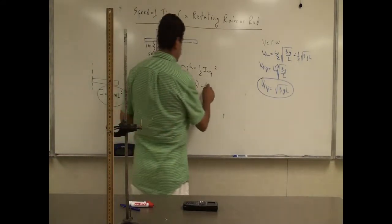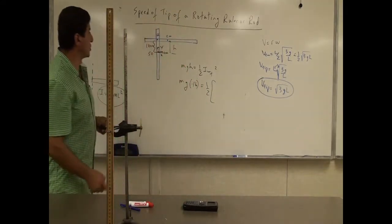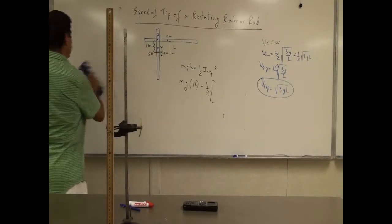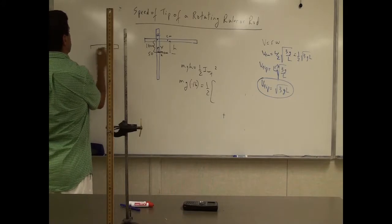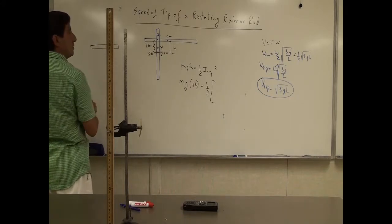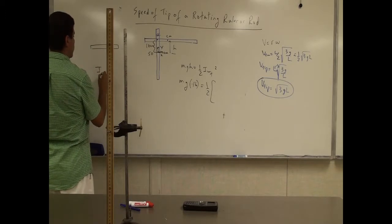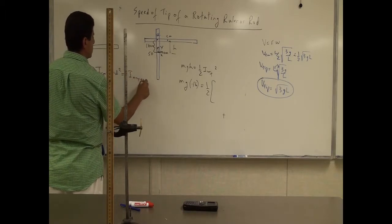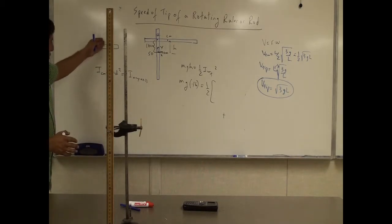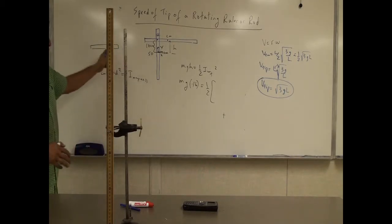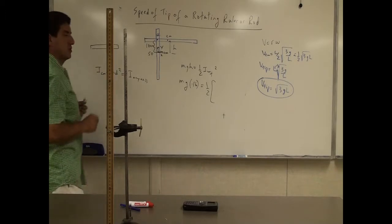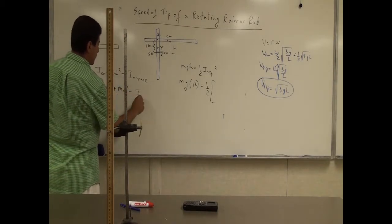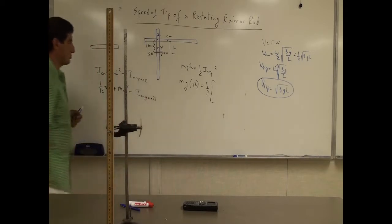What's the moment of inertia? For a rod about any point other than the center, we use the parallel axis theorem: I_cm + md² equals I about any axis. We take the moment of inertia about the center of mass and shift it to the 66 centimeter mark.